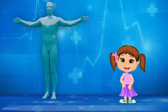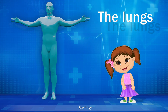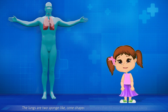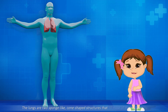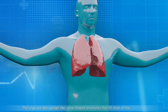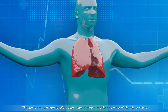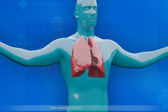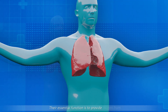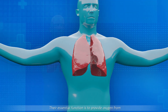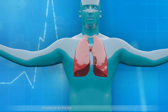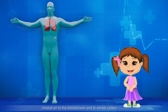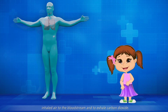The lungs. The lungs are two sponge-like, cone-shaped structures that fill most of the chest cavity. Their essential function is to provide oxygen from inhaled air to the bloodstream and to exhale carbon dioxide.